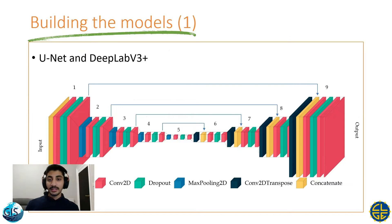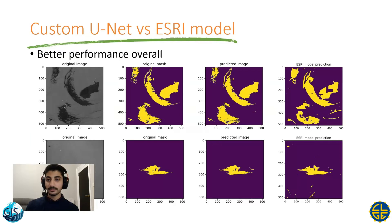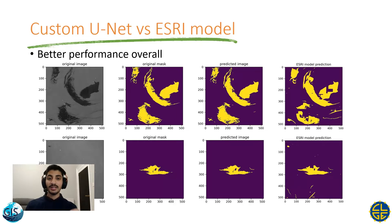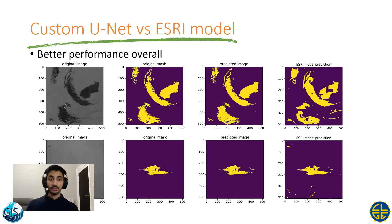I then built my deep learning models, which were based on U-Net and DeepLab architectures, and their architectures can be seen in this diagram. At the same time that I built my deep learning model, ESRI released their own oil spill detection model, so I used this to compare the results of my model against ESRI's model.